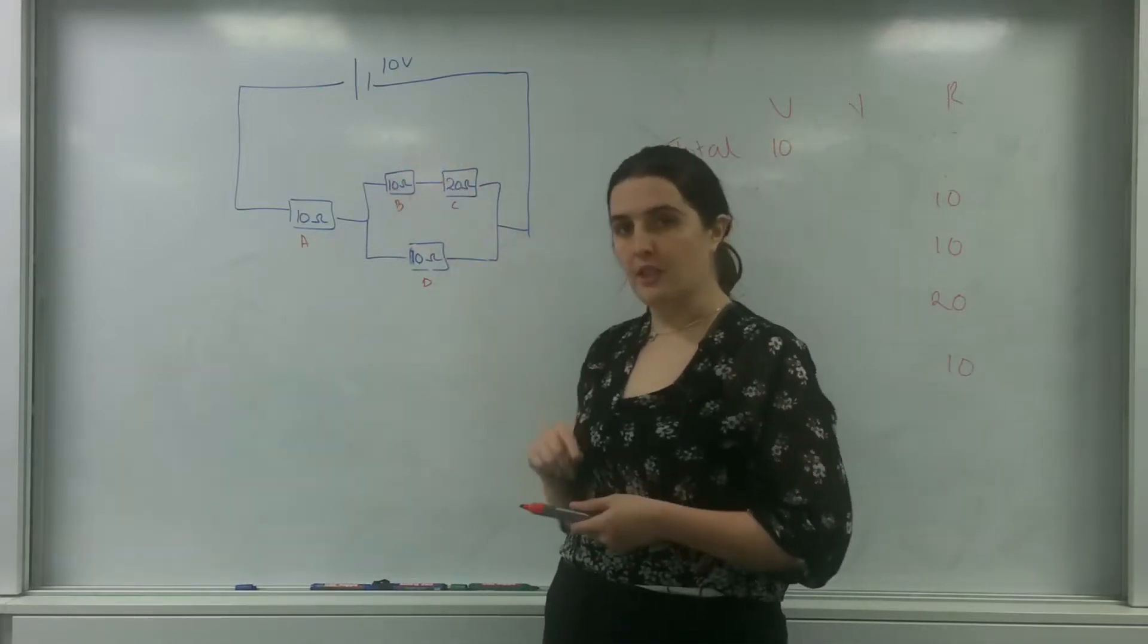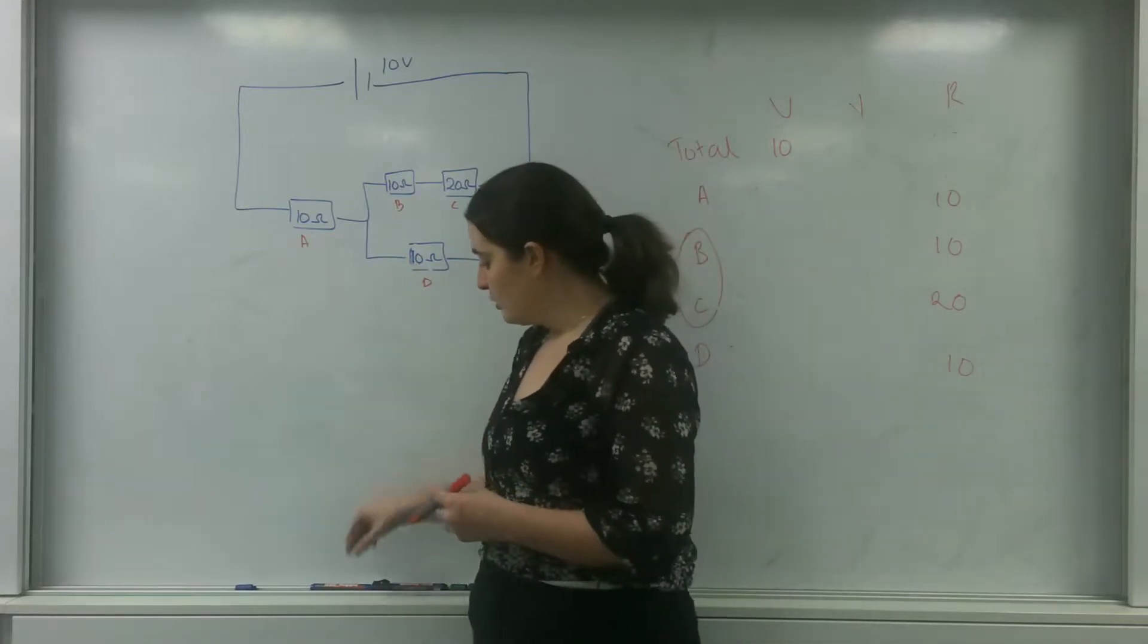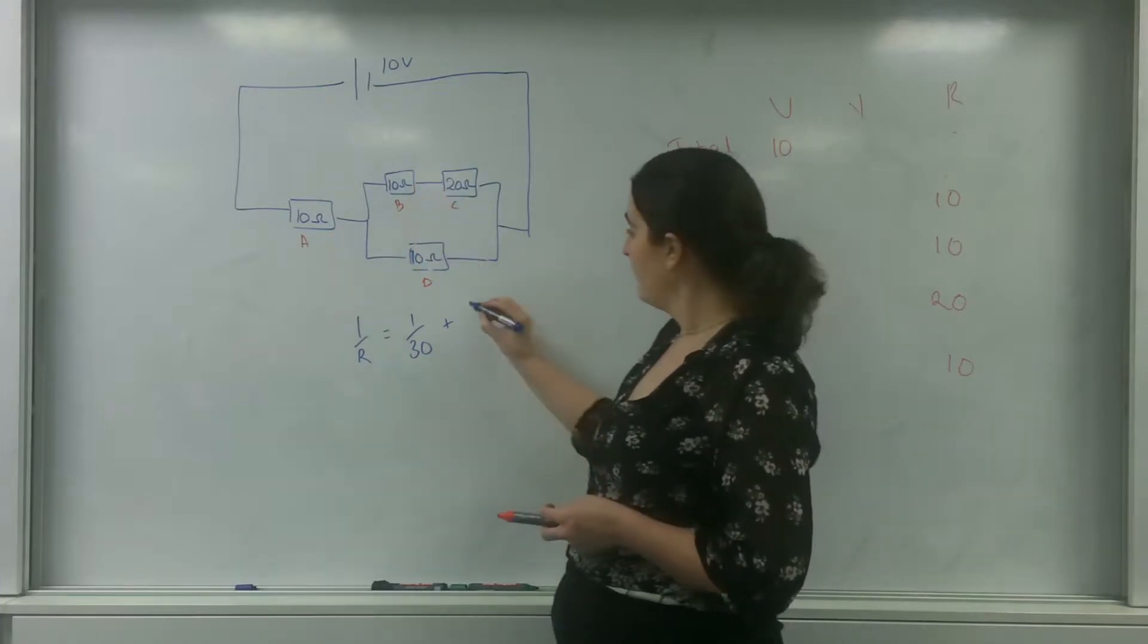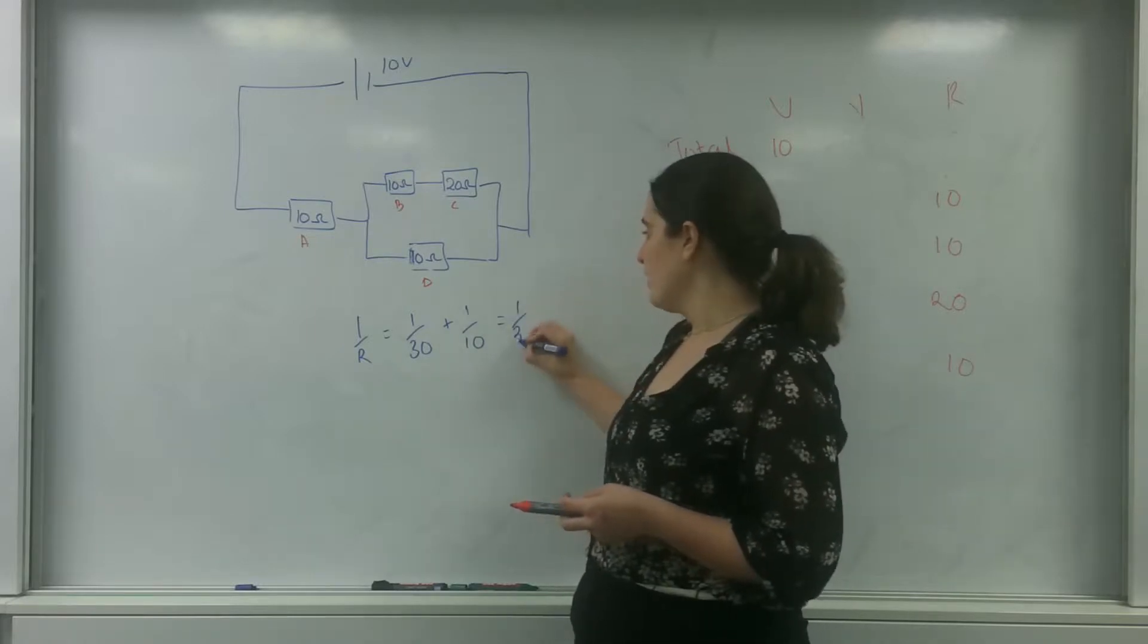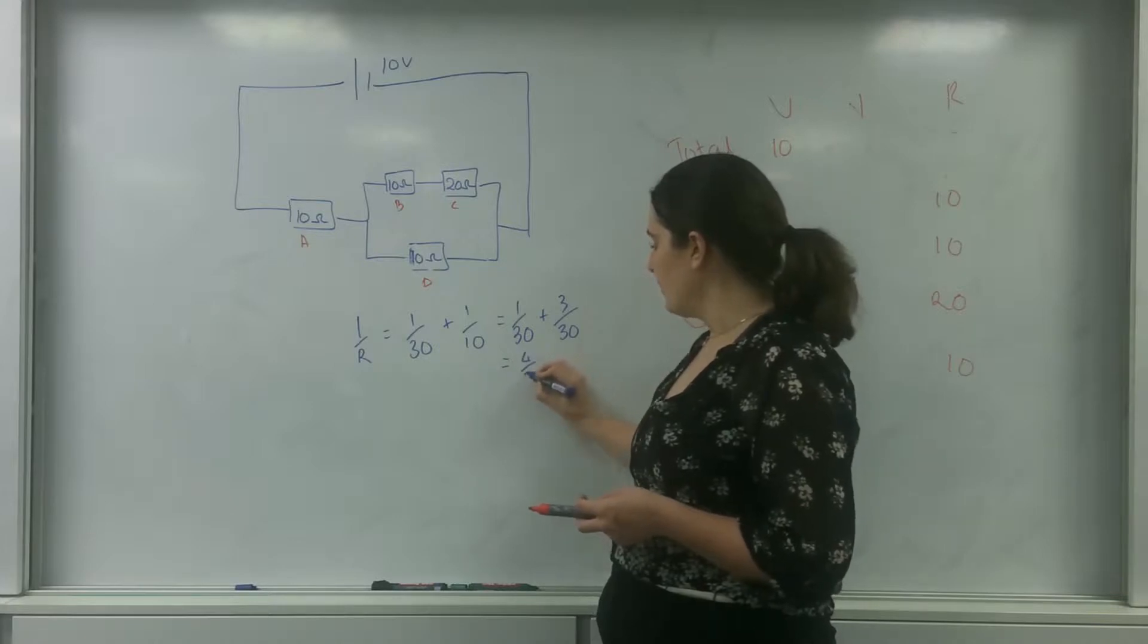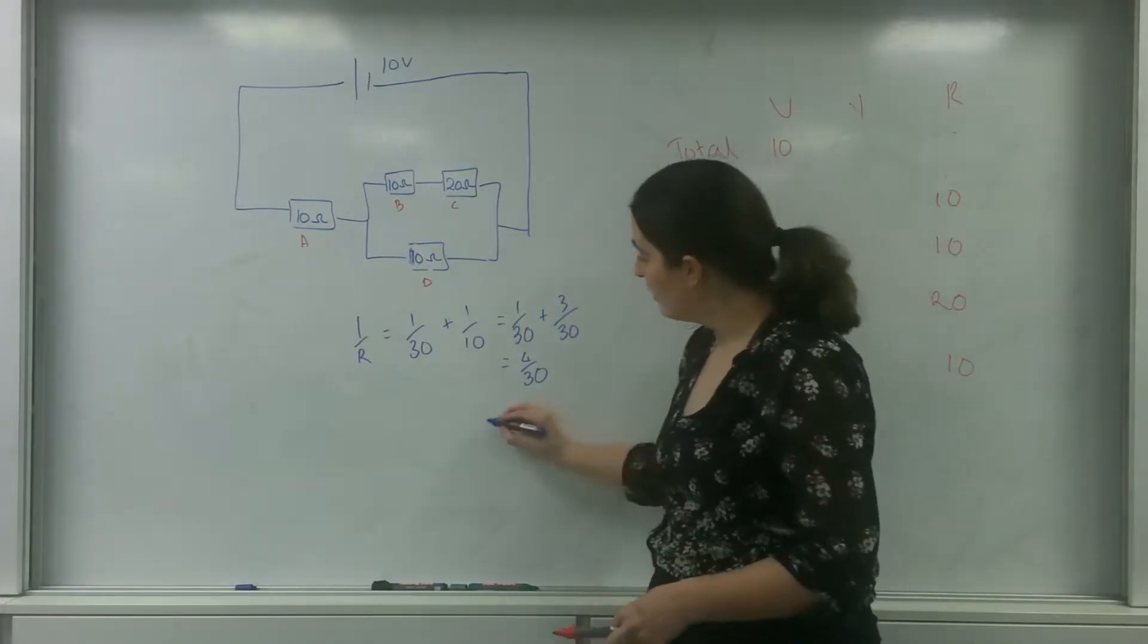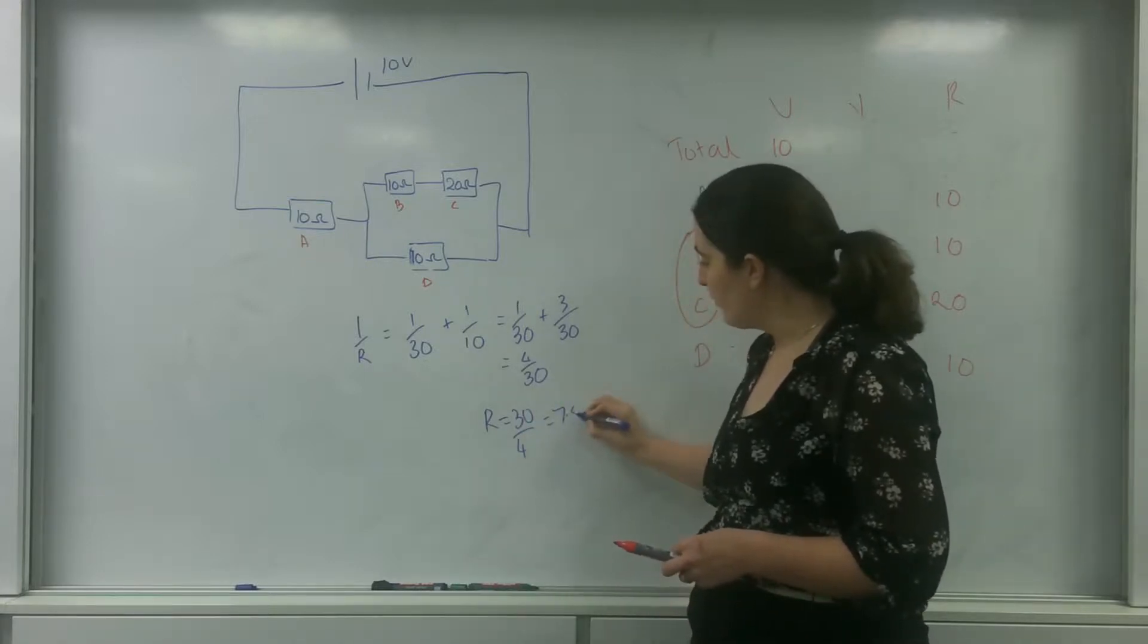So this branch has got 30 ohms and this branch has got 10, and they're in parallel with each other. So we'll use the parallel formula. So 1 over the resistance is 1 over 30, because 30 is this branch put together, plus 1 over 10. So that is 1 over 30 plus 3 over 30, which is 4 over 30. And that's 1 over R, so to get R, I need to flip this over. So R is 30 over 4, which is 7.5 ohms.